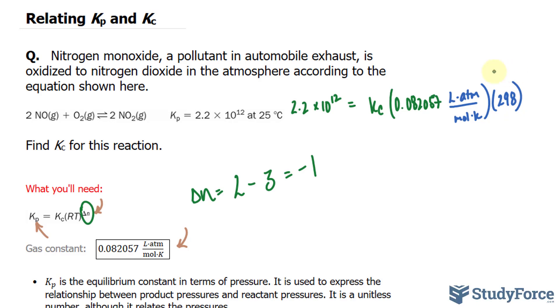And now all of this, all of this part, is being raised to delta N, which is negative 1. To find Kc, I will multiply all of this out, raise it to the power of negative 1, then divide both sides by that number.